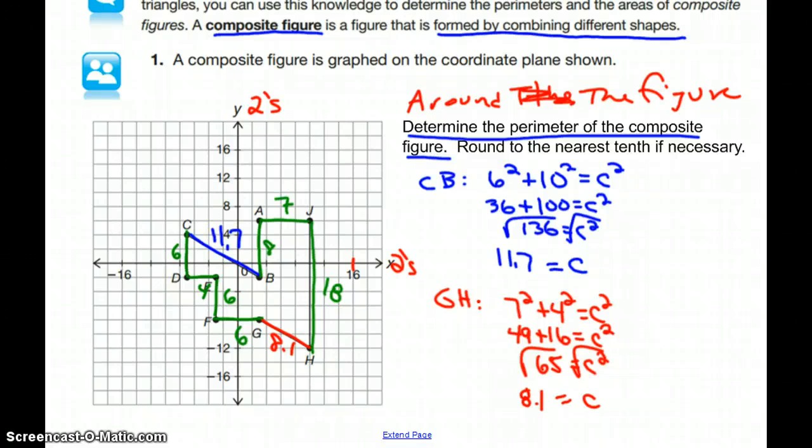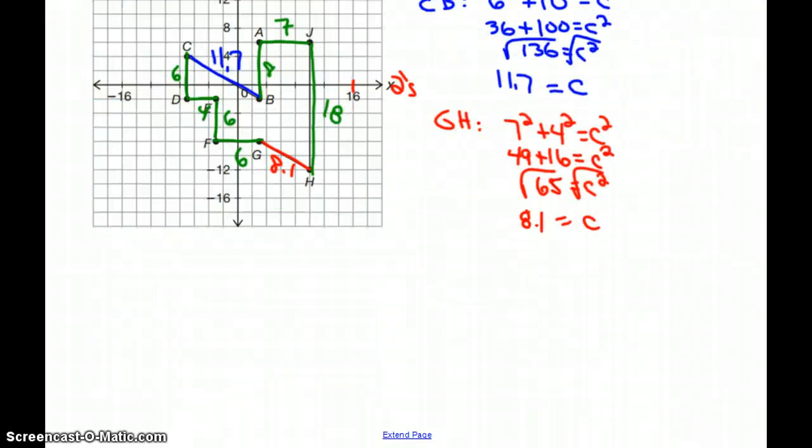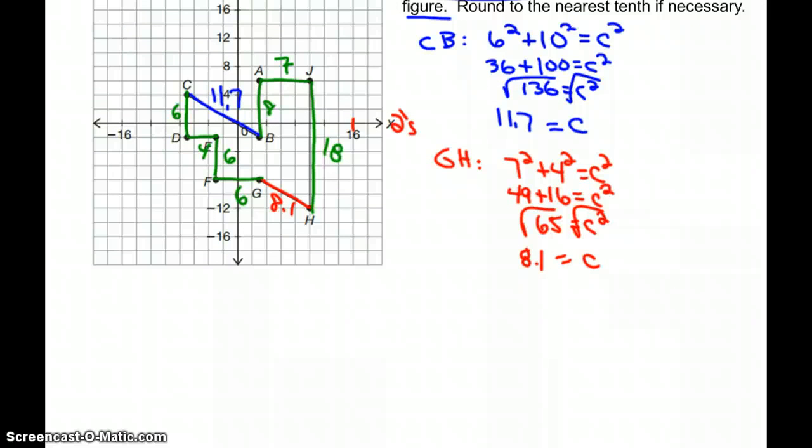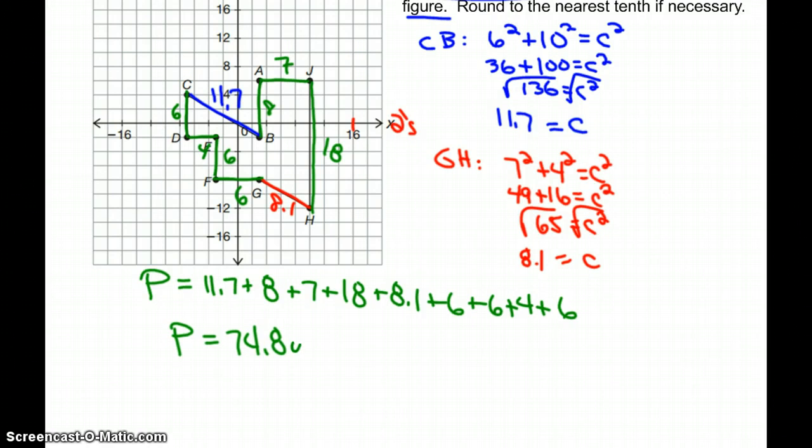As I go through and add all of those lengths together, taking 11.7, 8, 7, 18, 8.1, 6, another 6, 4, and 6, adding those all together, our perimeter turns out to be approximately 74.8 units. Thank you for listening.